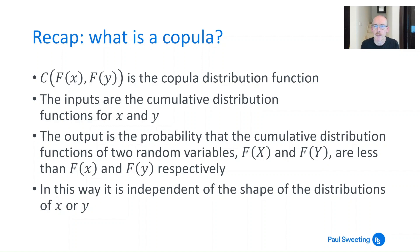When we talk about copula we're normally talking about a copula distribution function, something that checks out a probability essentially. The way these are formulated if you've got two variables is c(F(x), F(y)). The inputs F(x) and F(y) are the cumulative distribution functions for x and y and the output is the probability that the cumulative distribution functions of two random variables F(X) and F(Y) are less than F(x) and F(y) respectively.